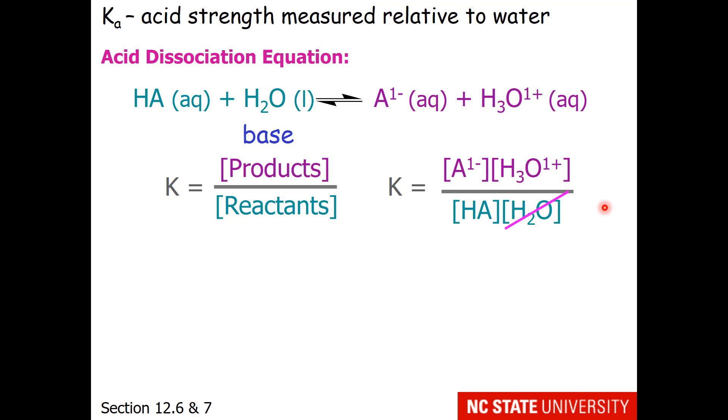So our K would be the conjugate base times hydronium over the reacting acid times water. But of course you know that water has an activity of 1. So our equilibrium expression is just conjugate base times hydronium over our initial acid. This is known as the acid dissociation constant or Ka.